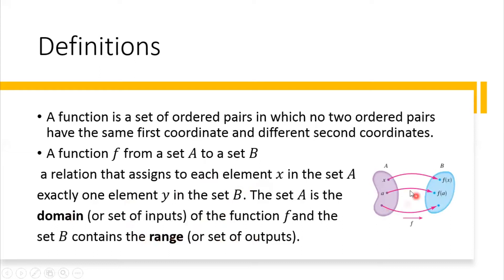To understand more, here is an illustration. This is a function because by definition, every element in set A has exactly one element in set B, or one corresponding value in set B. For example, element x has one corresponding value which is f(x) only; a has one corresponding value which is f(a); and this point has one corresponding value which is this point. So, this correspondence or relation is what we call a function.